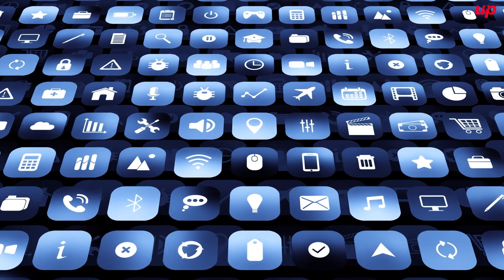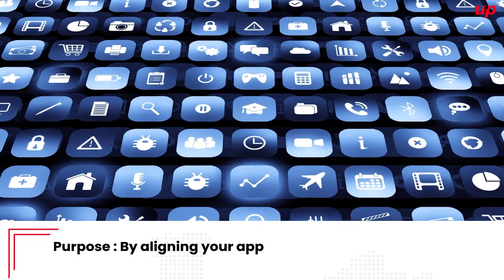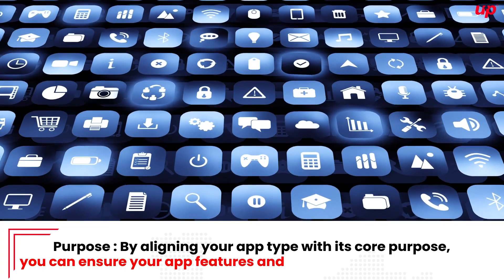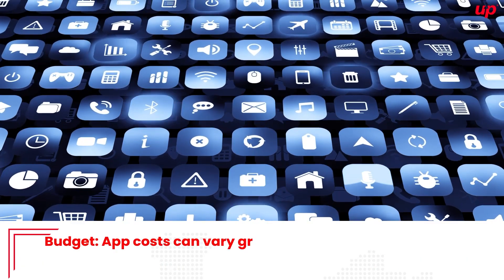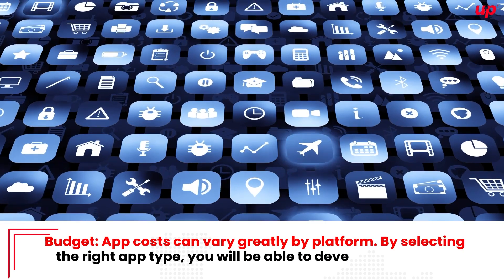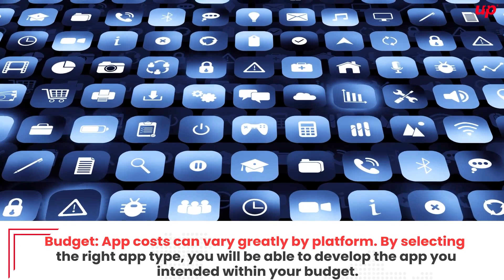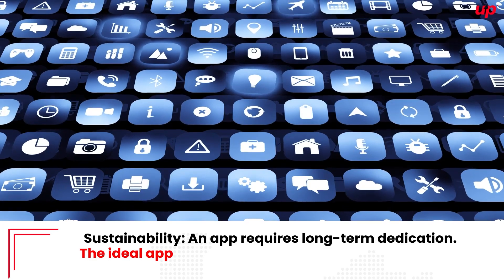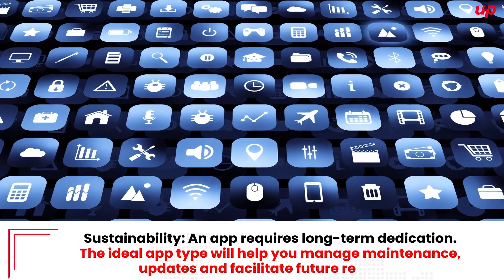There are three things to keep in mind when choosing the app type. Purpose: by aligning your app type with its core purpose, you can ensure your app's features and capabilities are user-driven. Budget: app cost can vary greatly by platform, and by selecting the right app type, you will be able to develop the app you intended within your budget. Sustainability: an app requires long-term dedication — the ideal app type will help you manage maintenance, updates, and facilitate future releases.